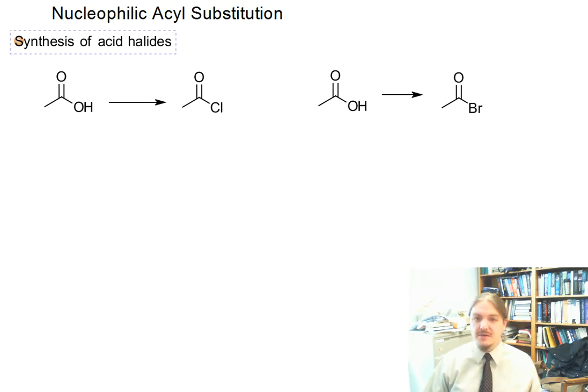All right. So the reagents generally used to make acetyl chloride or any other acid chloride from its carboxylic acid is thionyl chloride. We've encountered this reagent before. It is a reagent of choice for converting OH groups, hydroxy groups, into chlorines.